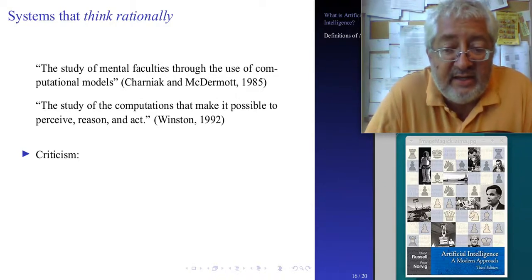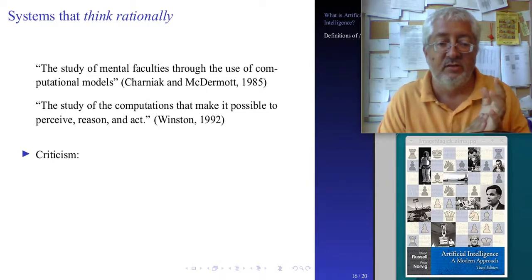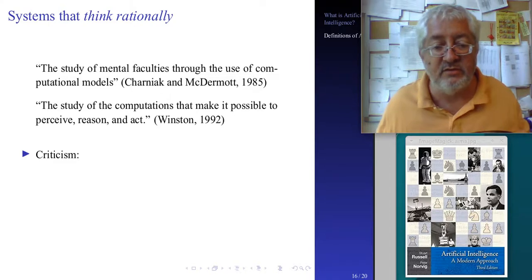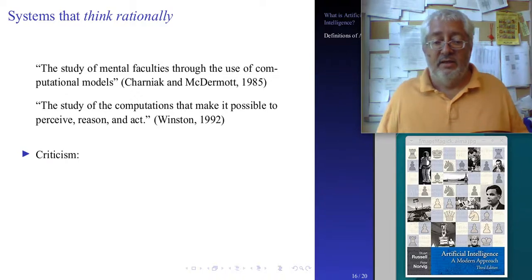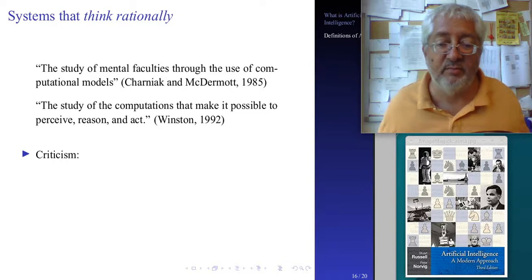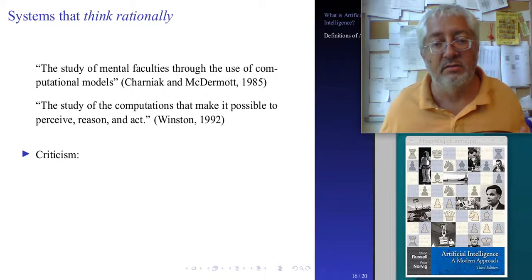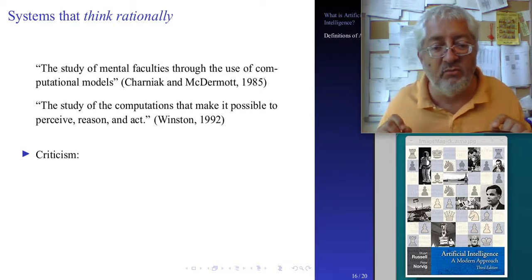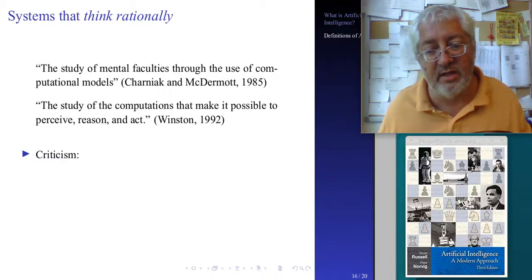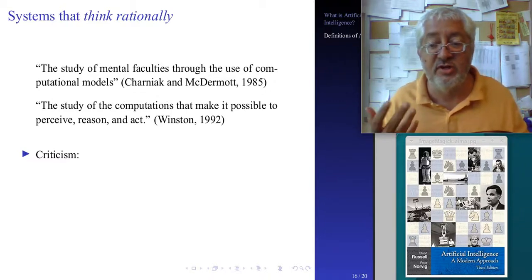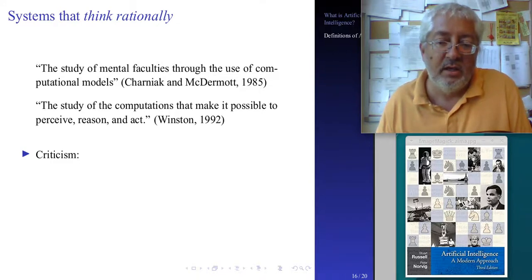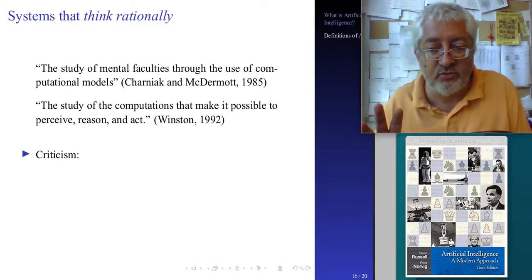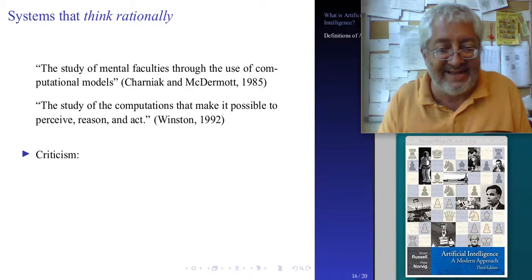Finally, systems that think rationally would be another approach. You could say AI is 'the study of mental faculties through the use of computational models,' or 'the study of the computations that make it possible to perceive, reason, and act.' One problem: both these definitions talk about study. AI is not only a study — that would be computational neuroscience or biology. AI is an engineering discipline that tries to create an artifact that actually does these things.